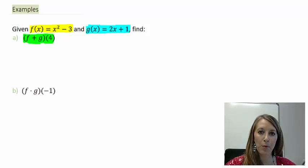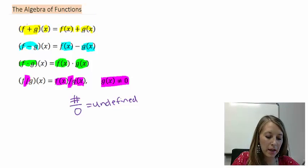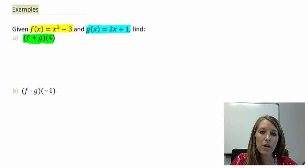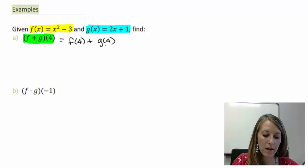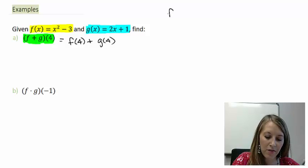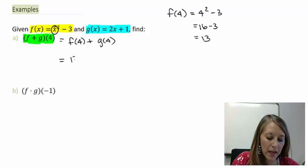We can do this two separate ways — let me show you the easier way first. We just learned that when adding two functions we can do the addition last. So I know this can be f(4) plus g(4). I need to figure out what f(4) is by substituting 4 into x: 4 squared minus 3 gives me 16 minus 3, which is 13.